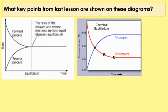So first of all, what key points from the last lesson are shown on these diagrams? This diagram on the left shows that the rate for the forward reaction decreases — remember, the rate is the gradient. So the forward reaction rate is decreasing and the reverse process is increasing, until they level out at the same rate. At this point, shown by the dotted line, that's when dynamic equilibrium is reached.